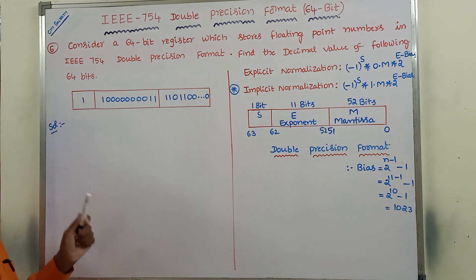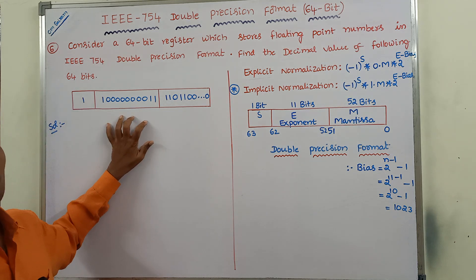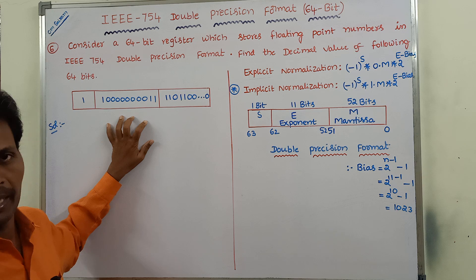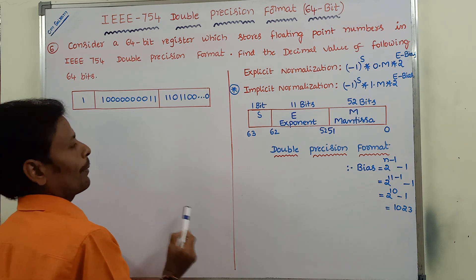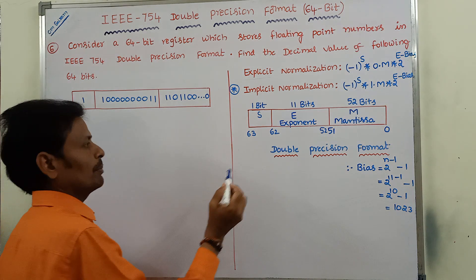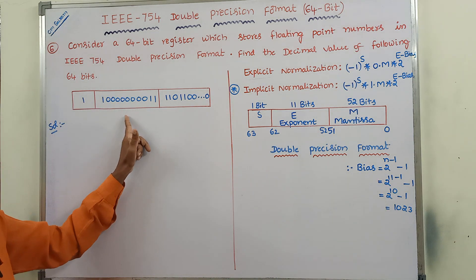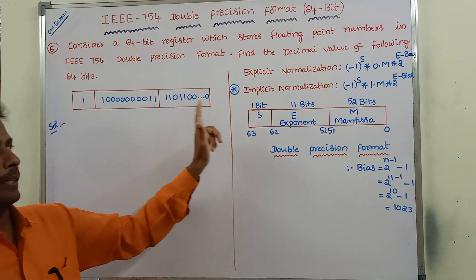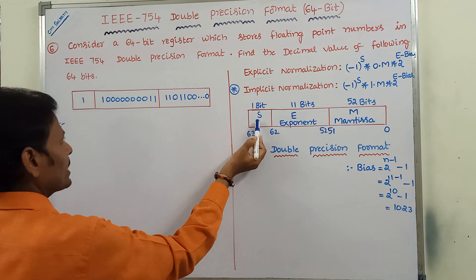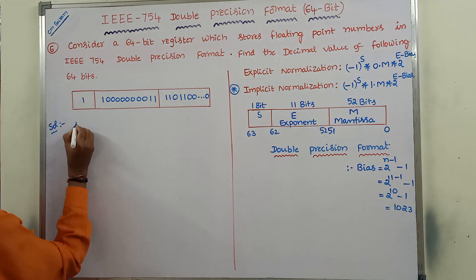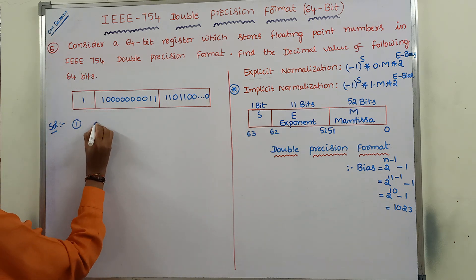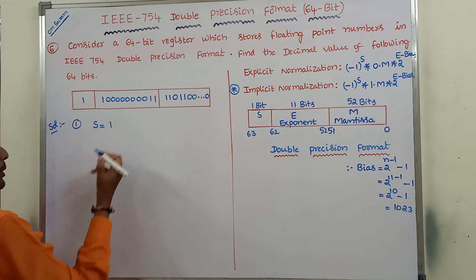Now we can go to solve this problem. In the given problem, a 64-bit IEEE 754 double precision format is given. When we compare this with the standard IEEE 754 double precision format, first we have to know the S bit value. When comparing, we can find that the S value is 1.